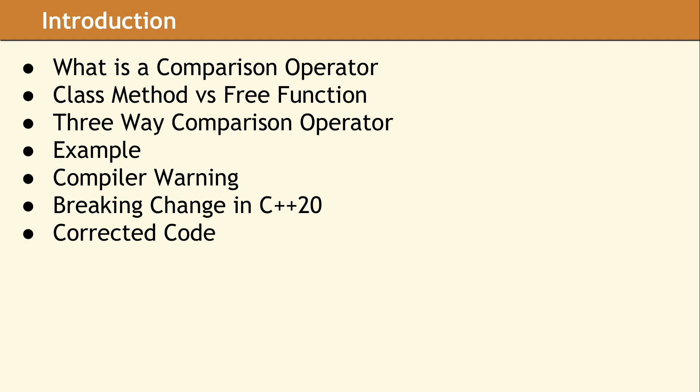There is a long-standing debate about where comparison operators should be implemented. Some say they should be class methods, and other developers argue for free functions. So, do the changes in C++20 reshape the answer to this question? We are going to start by looking at the definition of comparison operators and where they should be implemented. Then we will show an example which demonstrates a problem which can occur when compiling with C++20.